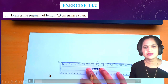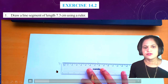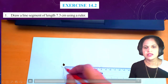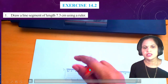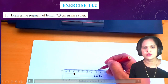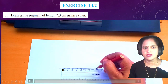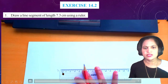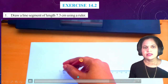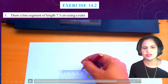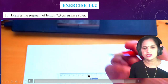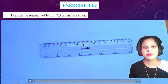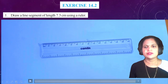Take the scale and with the help of the pencil draw a line from point A. Hold the scale tightly with one hand. With the other hand, mark two points — one at 0 and another at 7.3 cm — and draw the line. Hold the scale tightly with one hand and draw the 7.3 cm line like this.